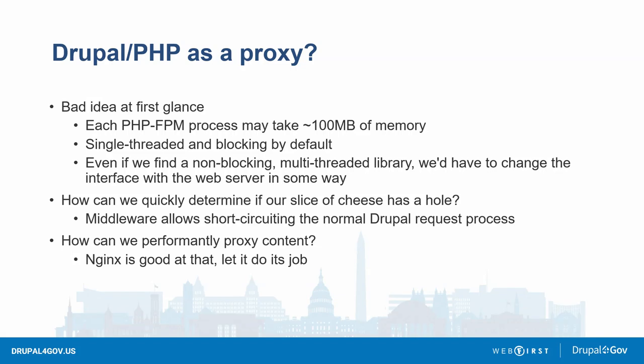Proxies need to handle lots of requests all at once. Even with libraries for parallel requests, we're still dealing with FastCGI (the F in PHP-FPM), which is based on the older CGI protocol — not allowing interleaved requests like HTTP/2. So we're not going to do our proxying through PHP. Instead, we use our middleware to make a quick decision: does our slice of cheese have a hole in it? Then we kick it back to the web server — in our case nginx.